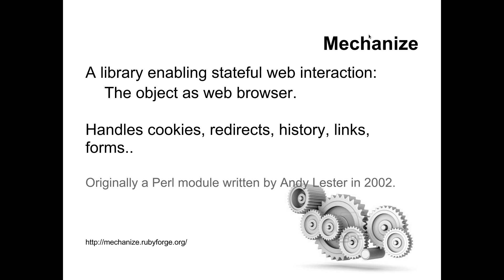Mechanize is a Ruby library that enables stateful interactions with the web, so you create an object that works like a web browser. It handles cookies and sessions so you can do authentication to websites. It'll handle redirects for you, automatically following redirects when the server gives you one of those 302 codes. You can have a link history so you can list the pages you visited and keep track of them inside your object.